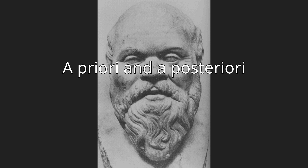Both terms appear in Euclid's Elements, but were popularized by Immanuel Kant's Critique of Pure Reason, one of the most influential works in the history of philosophy. Both terms are primarily used as modifiers to the noun knowledge — e.g., a priori knowledge — but can also modify other nouns such as truth. Philosophers may also use aprioricity, apriorist, and aprioricity as nouns referring to the quality of being a priori.